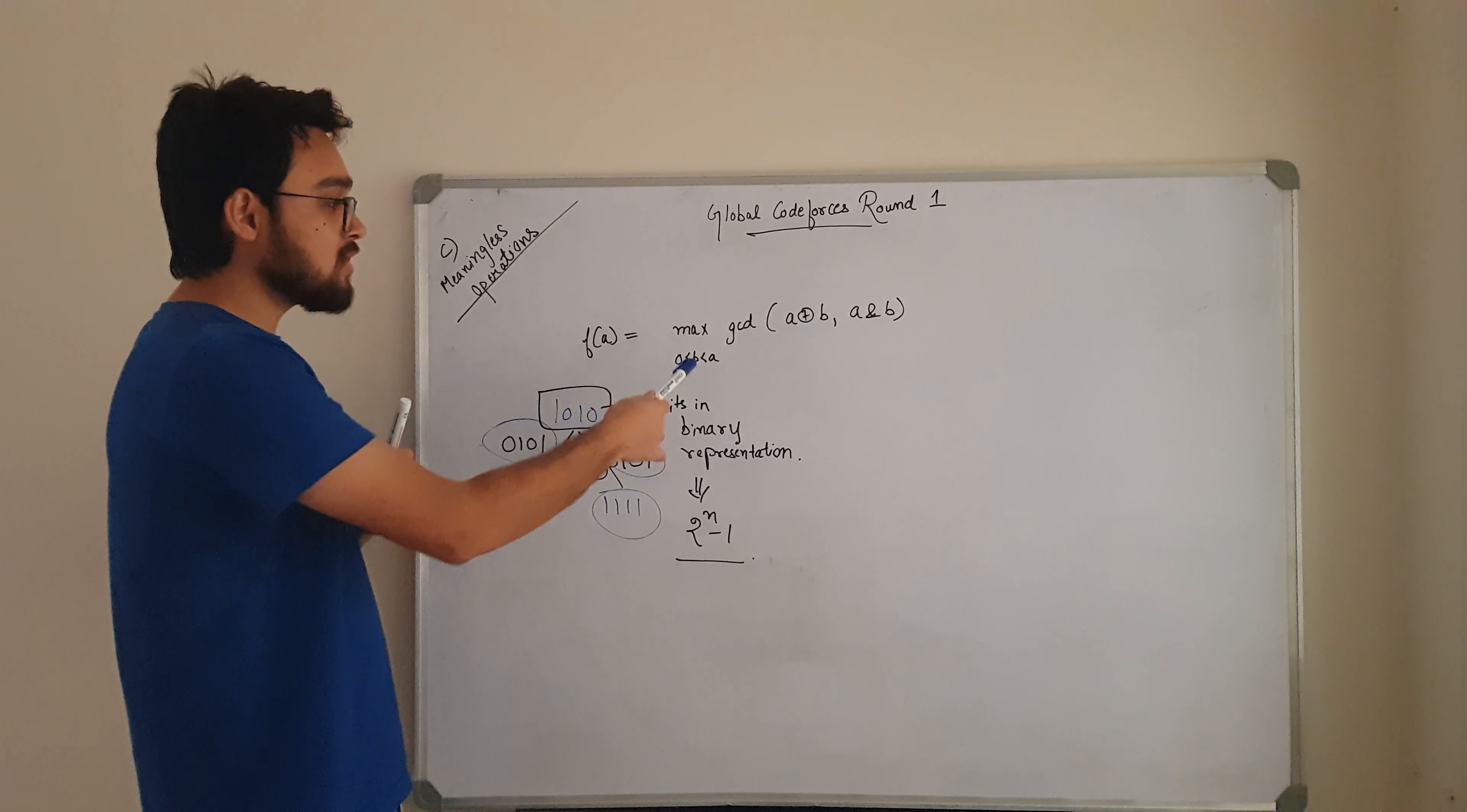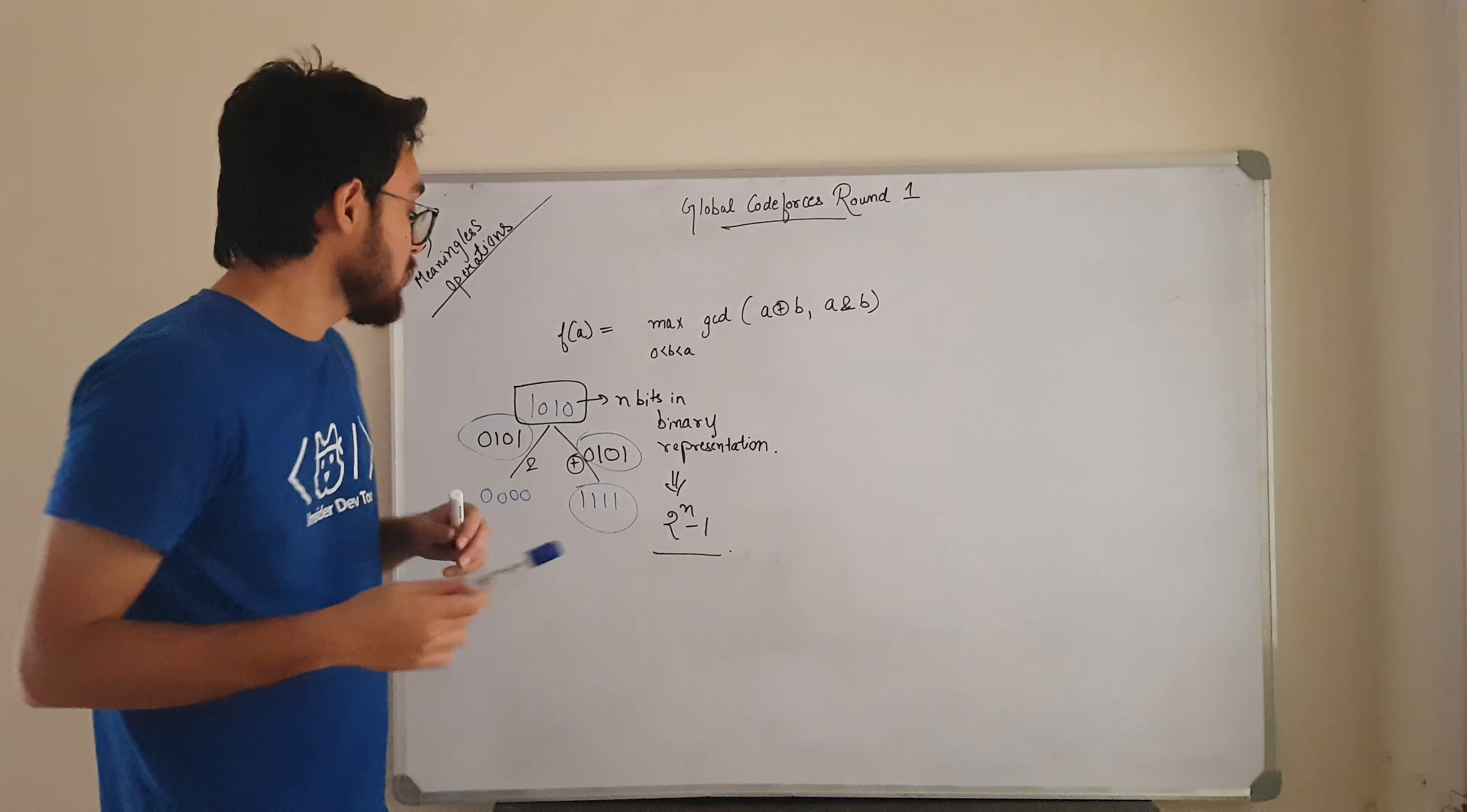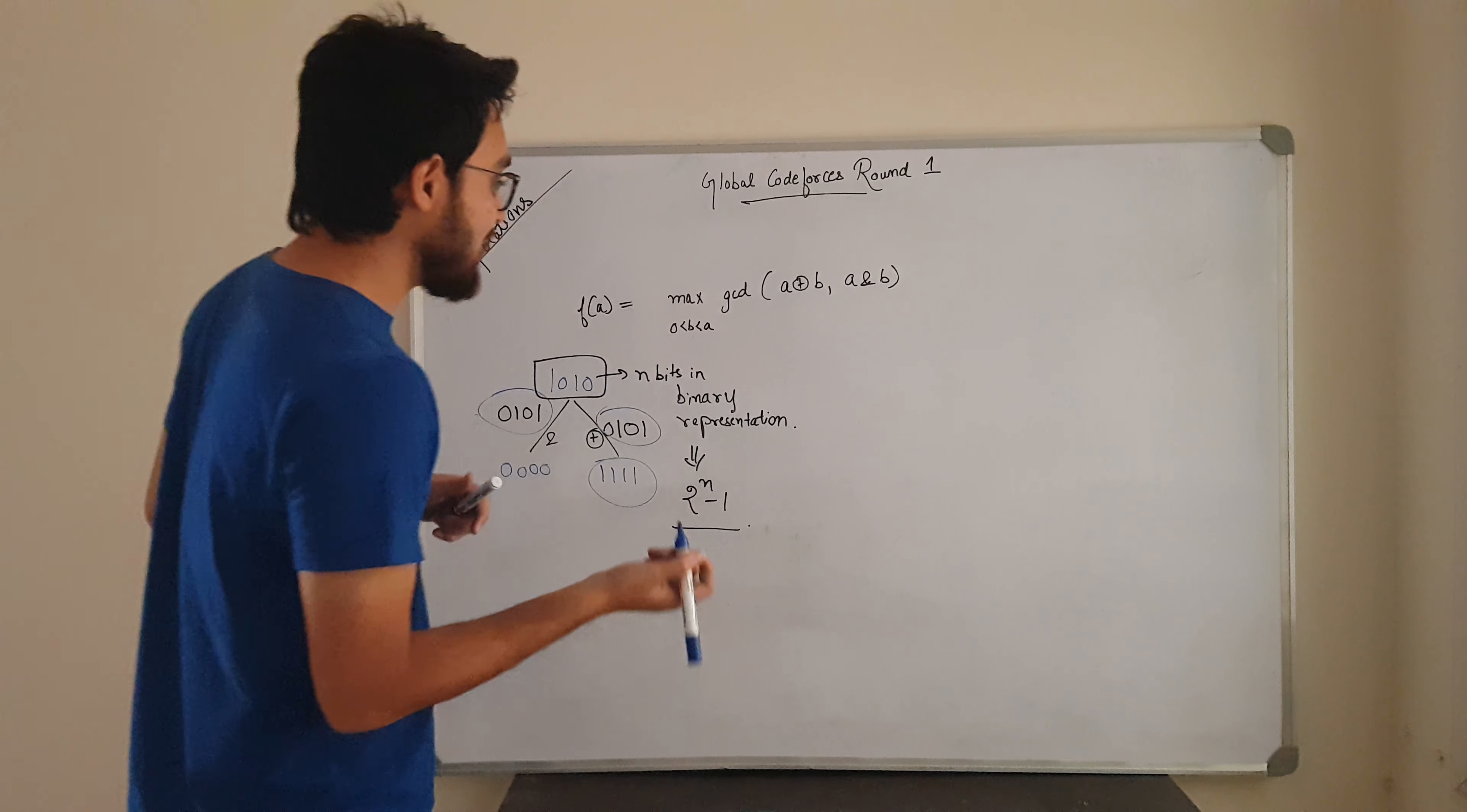That's pretty much correct. But what happens if we have all ones? We can't have all zeros because the number A is set to be greater than 0. But we can have all ones, right? So let us check that case as well.